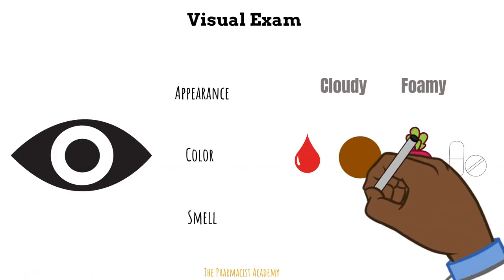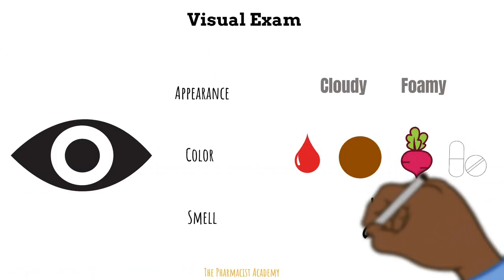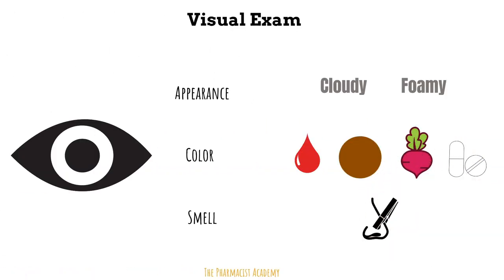If the urine smells fishy it's most likely due to an infection, and if it smells like acetone it may indicate the presence of ketones.